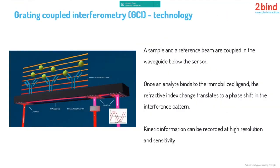Pre-optics has mastered that challenge by a clever way of grating and aligning and coupling the sample and reference beam into a waveguide below the sensor. It is now possible to analyze the signal from the complete chip. The two coupled beams form an interference pattern, and once an analyte binds to the immobilized ligand, the refractive index change translates to a shift in this interference pattern — the basis for a high-resolution, sensitive kinetic readout.